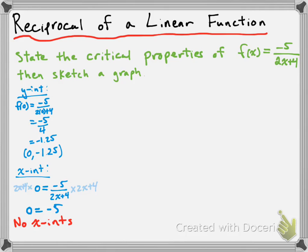Let's talk about the horizontal asymptote. The horizontal asymptote is the line that tells you what y-value the function will be approaching but won't actually touch. We know the function never achieves y = 0 because there are no x-intercepts, so the horizontal asymptote in this case is just the x-axis, which is y = 0.